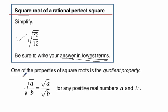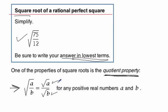One of the properties of the square root is the quotient property. You don't necessarily have to know that by name, but you do have to know how to use it. It just means that any fraction entirely enclosed under the radical sign can be broken up into the square root of the numerator over the square root of the denominator, for any real positive numbers A and B.